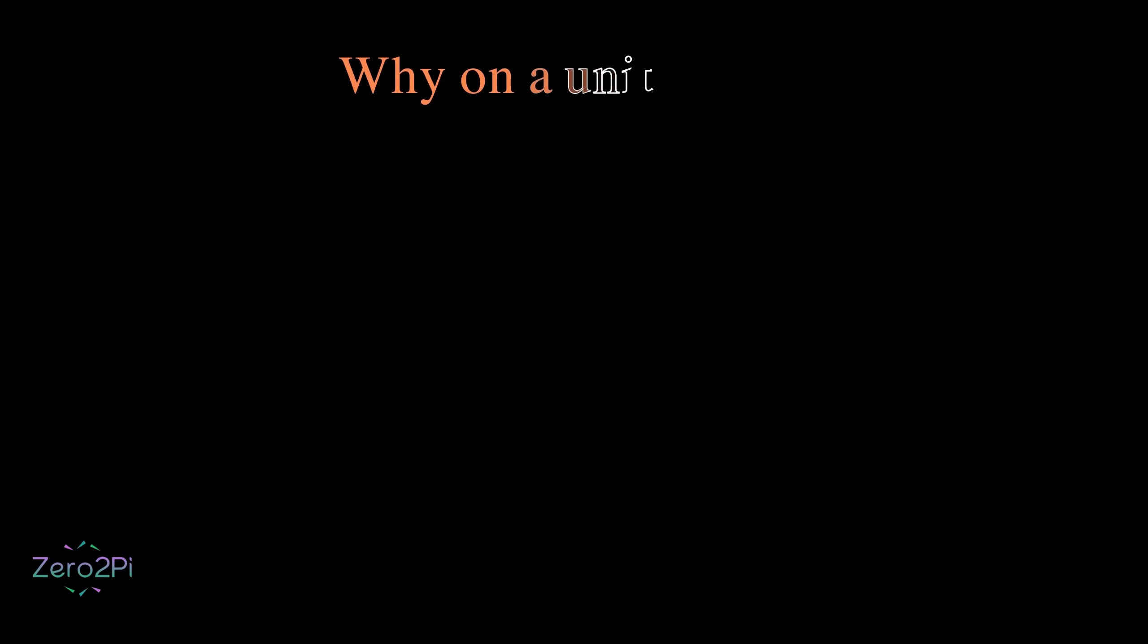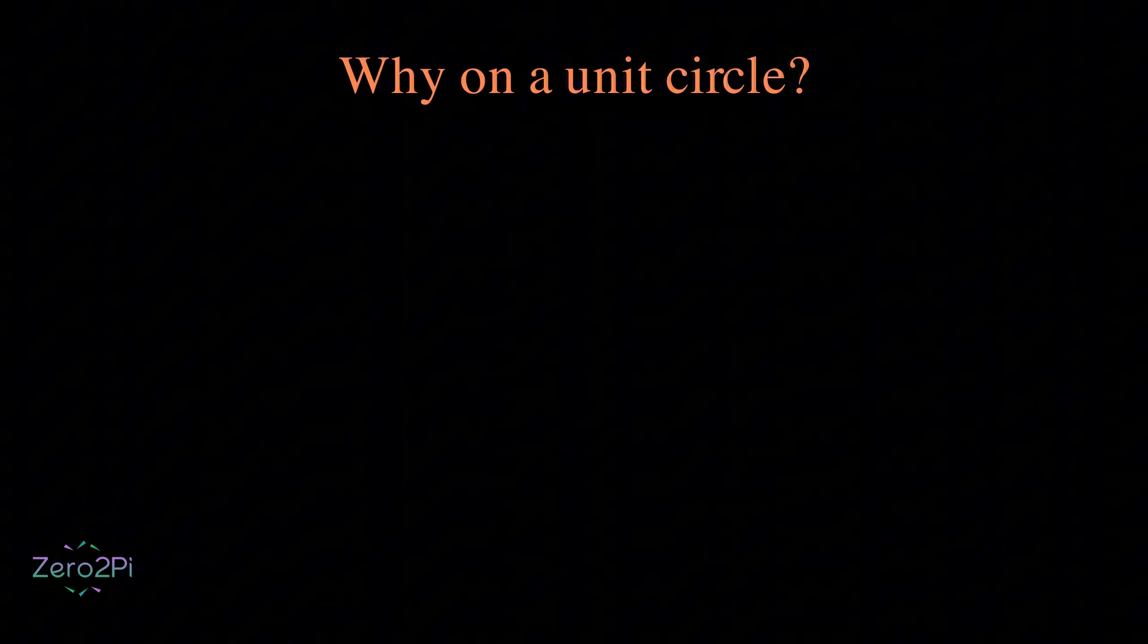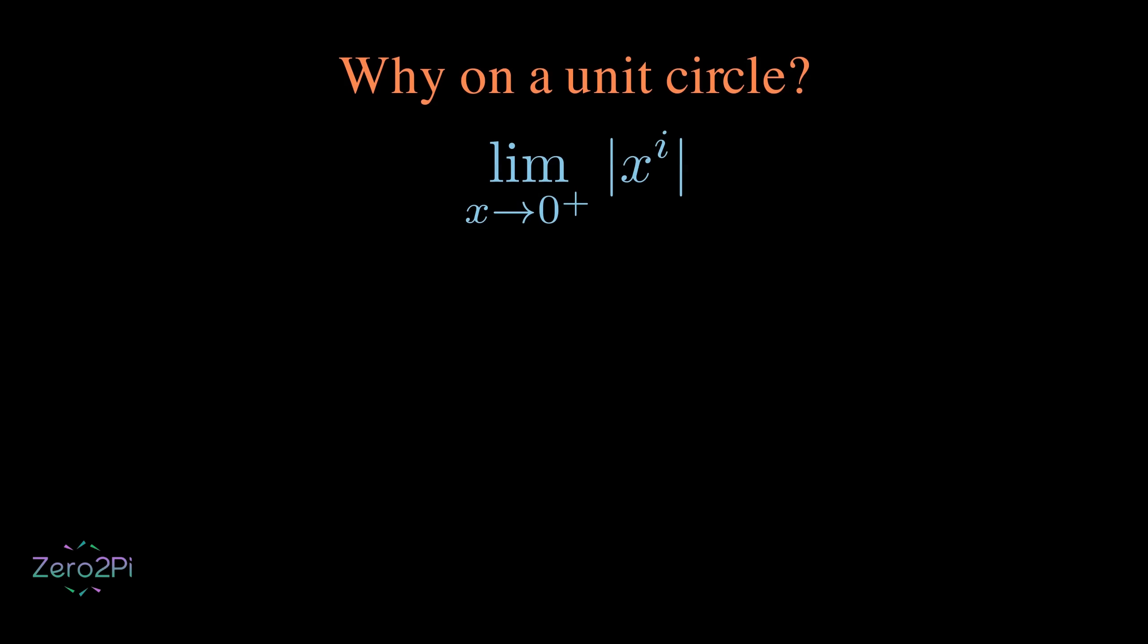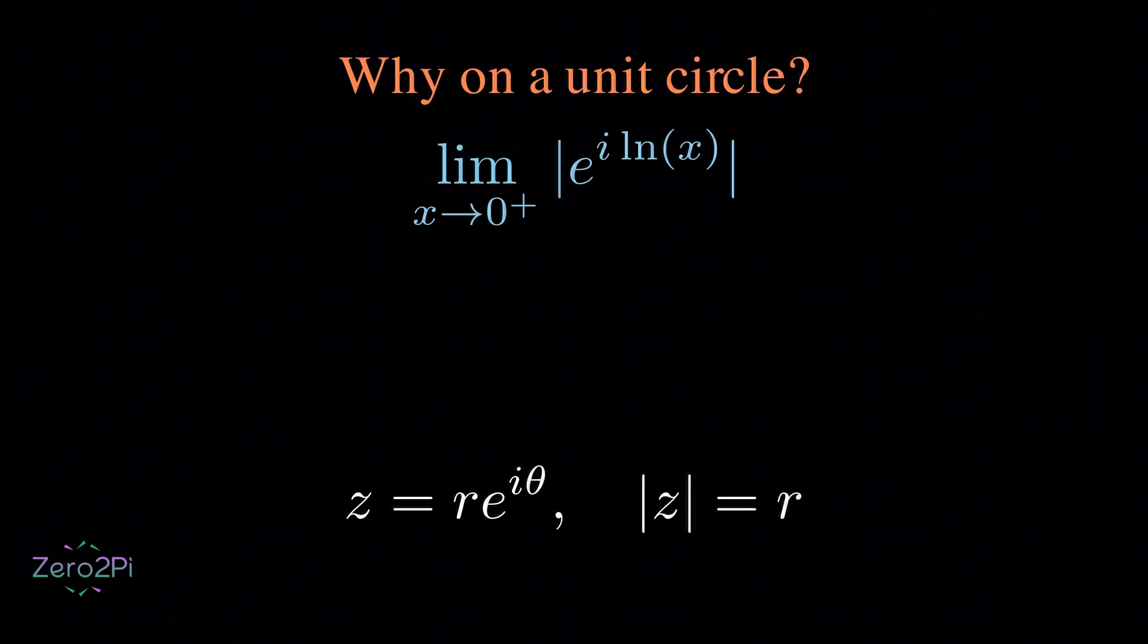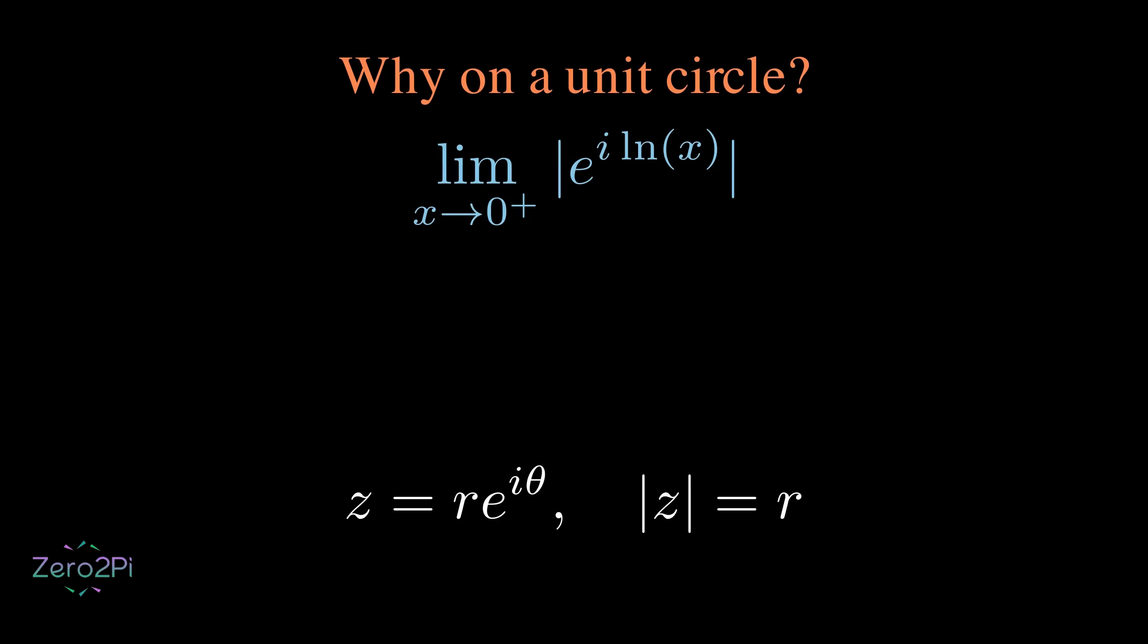You might be wondering, why on a unit circle? When we take the modulus of x power i as x approaches zero from the right, and we look at it through the polar form of complex numbers, the answer becomes clear. The polar form describes any complex number as a point with a length, called the magnitude, and a direction, which is the angle. So regardless of the angle or phase, the magnitude always stays one. That's because multiplying by a complex exponential doesn't change the size. It only affects the direction.